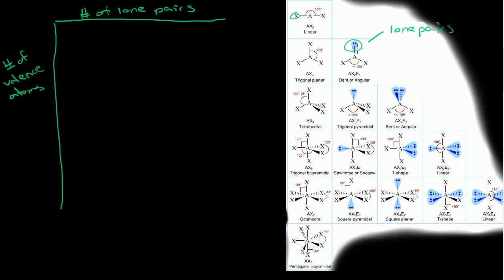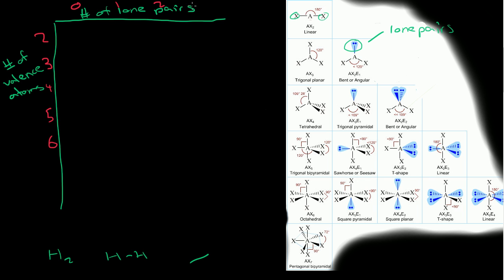The number of lone pairs can be 0, 1, 2, or 3. We need at least 2 valence atoms, because if we just had H2, that's just a line — no matter how we orient it in 3D space, it's just going to be a line. So we start with 2 valence atoms and go up to 3, 4, 5, 6.